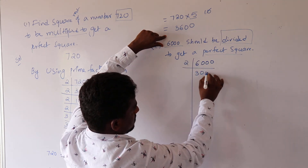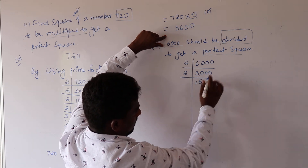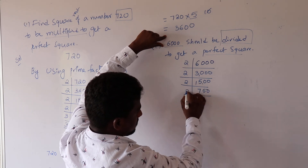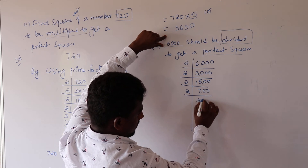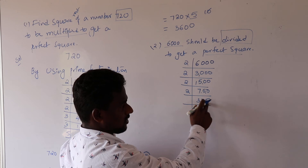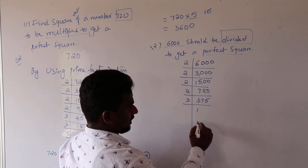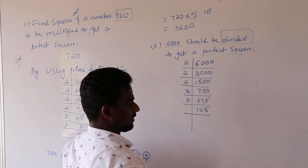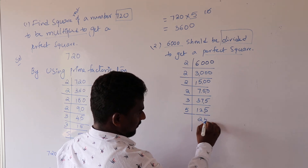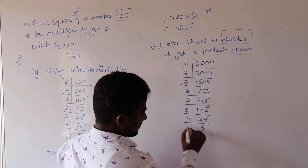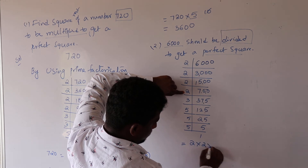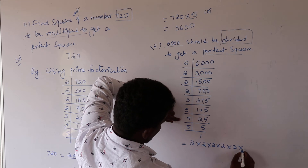Using the prime factorization method for 6,000: 6,000 ÷ 2 = 3,000, 3,000 ÷ 2 = 1,500, 1,500 ÷ 2 = 750, 750 ÷ 2 = 375. Since 5 is at the units place, 375 is not divisible by 2. Dividing by 3: 375 ÷ 3 = 125. Then 125 is not divisible by 3, so dividing by 5: 125 ÷ 5 = 25, 25 ÷ 5 = 5, 5 ÷ 5 = 1. So 6,000 = 2⁴ × 3 × 5³.